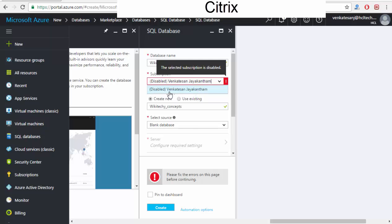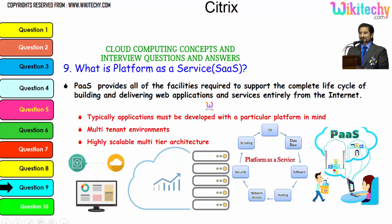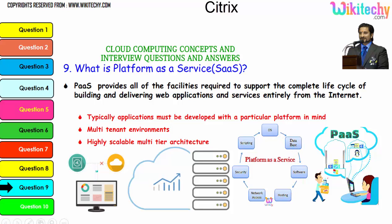Let's move on. What is Platform as a Service? PaaS provides all of the facilities required to support the complete lifecycle of building and delivering web applications and services entirely from the internet. Applications must typically be developed with a particular platform in mind. It's a multi-tenant, highly scalable architecture. PaaS means they give you the server with a particular operating system — you're renting an OS — and you can put whatever software, database, hosting, network access, security, and scripting you need.